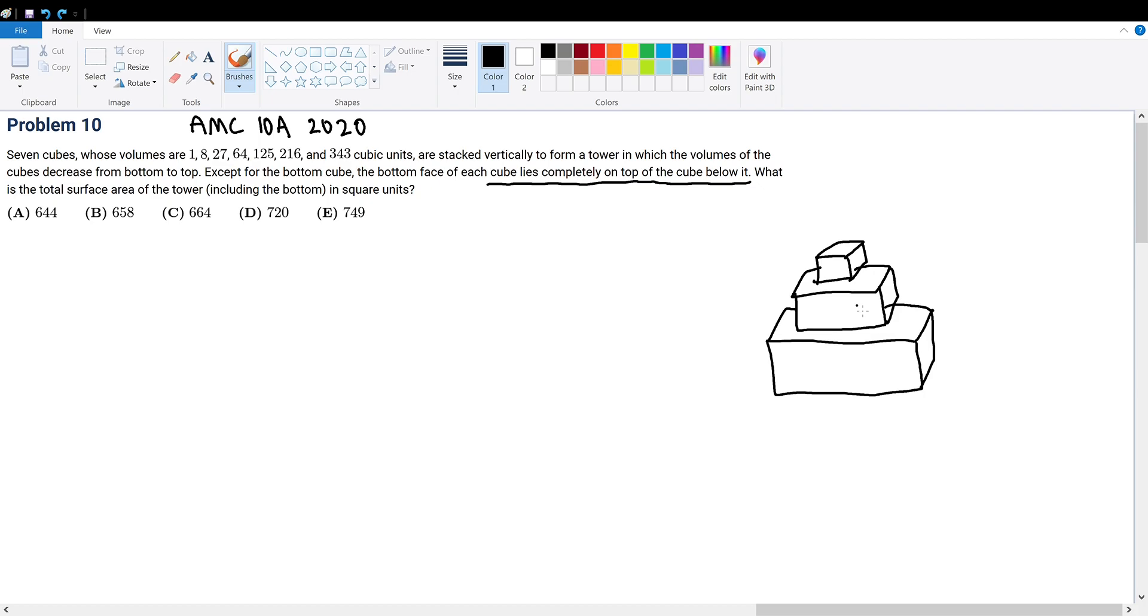You'll notice that underlined, each cube lies completely on top of the cube below it, because this will become important in determining the surface area of this entire structure. To the right hand side of the screen, I've drawn a figure of what this question is modeling, and the volume of each decreases from bottom to top as the question states.